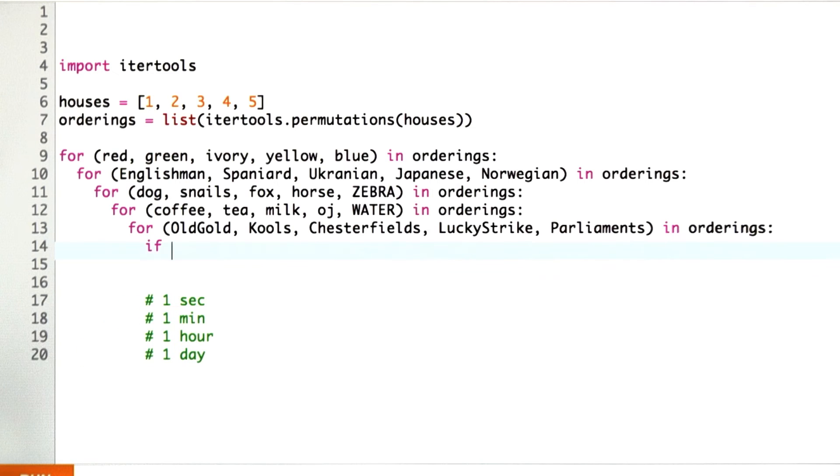We want to write some if statement to check if the Englishman lives in the red house. If so, we go on. If not, we give up. How do we check if it's true that the Englishman lives in the red house? If, and then I want you to fill in some expression here, and we'll just say that this is constraint number two. So tell me what you could put in here.